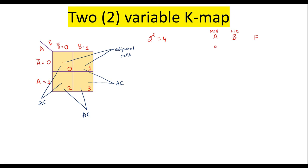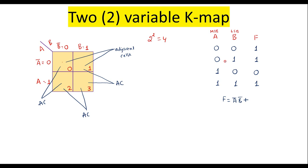Let me take one example. With two variables, the possible inputs are 00, 01, 10, and 11. Assume the output for 00 is 1, for 01 the output is 1, for 10 the output is 0, and for 11 the output is 1. With respect to this output column, the Boolean expression is F equal to A-bar·B-bar + A-bar·B + A·B.